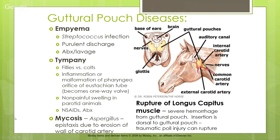Diseases of the guttural pouch include empyema, caused by a Streptococcus infection — it means a purulent, pussy discharge. We use antibiotics and lavage out the guttural pouches by placing an endoscopy tube up into the nose and flushing it through.